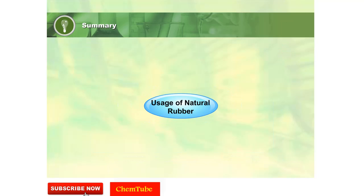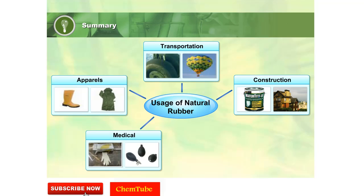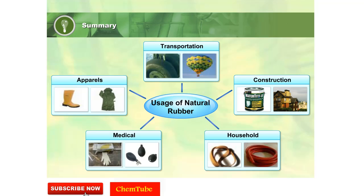Products of natural rubber are used in apparel, transportation, construction, medical, and household applications. These products make use of the natural properties of rubber.